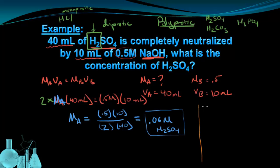One last note here, if I instead had a base with multiple OHs, so instead of NaOH, say I had calcium hydroxide, that has two OHs, I'm going to treat it the same way, except instead of multiplying the acid side by the number of Hs, I would multiply the base side, so the MbVb, by 2. And this 2 would account for the two hydroxides in the calcium hydroxide.